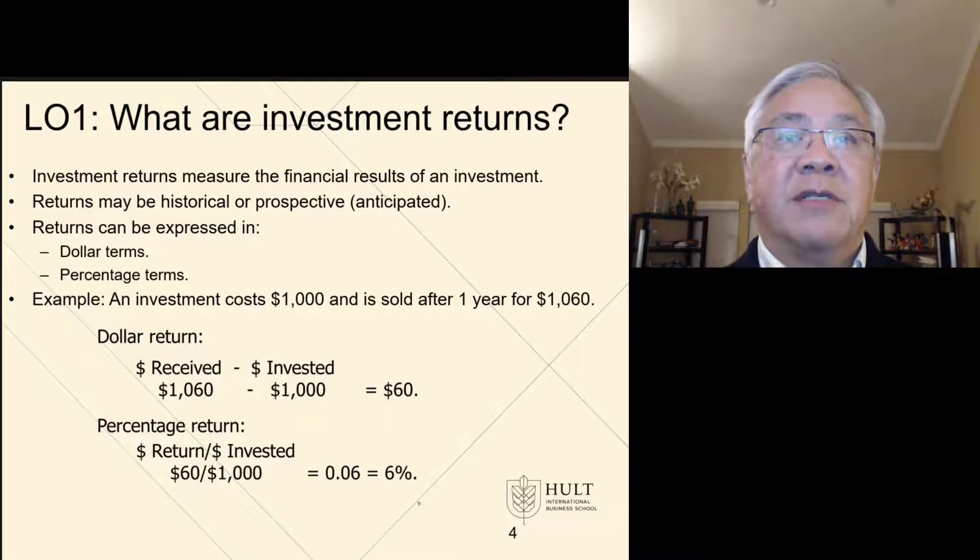So first, what are investment returns? It's a way to quantify the results of an investment. We'll see that there are two ways people normally express their returns. One is in dollar terms, the other is in percentage. Just to give a simple example, let's say we had an investment and the cost is $1,000 and it's sold after one year for $1,060. In terms of dollars, you simply subtract the value at the end of the year, $1,060, minus what you paid for it or invested at $1,000. And so the return is simply $60 in dollar terms. In percentage terms, you take the profit, which in this case is $60, divided by the base, which is the initial cost or the investment amount of $1,000. So we end it with 60 divided by $1,000, which is 6%. One way we could express this is on our investment of $1,000, we made a 6% return on investment in one year.